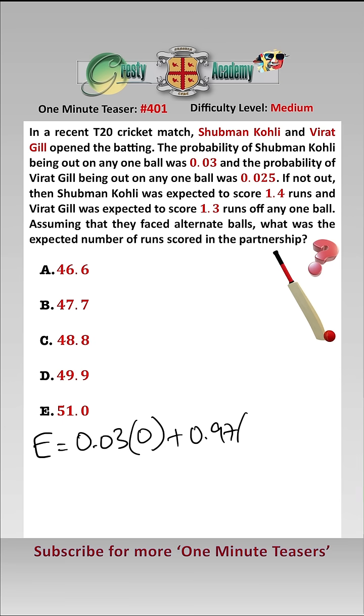.97, which is the probability he is not out on the first ball, times 0.025, which is the probability that Gill is out on the first ball, times 1.4, which is Kohli's expected number of runs on the first ball, add